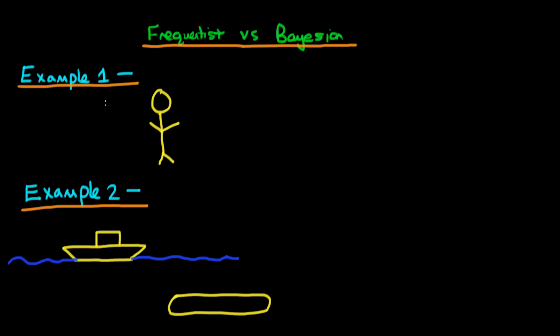In this video I want to provide two simple examples as to how frequentist approaches to a problem would differ to that of a Bayesian statistician.